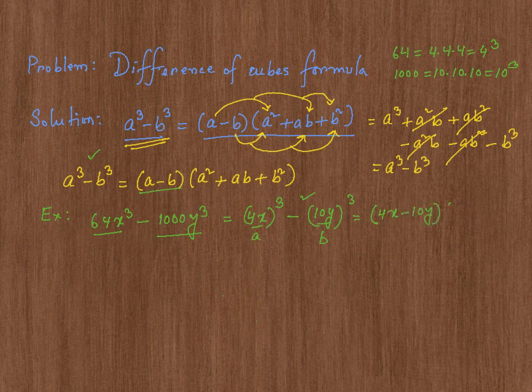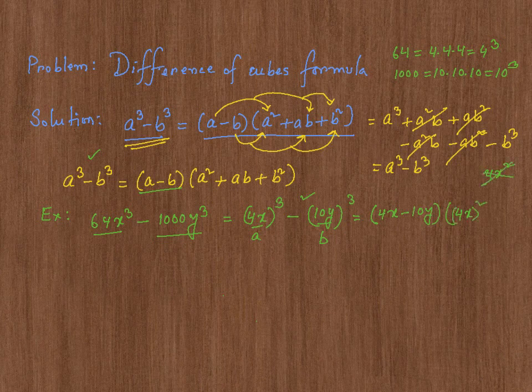Then times a square, means 4x, not 4x squared. That's not what you want, it's 4x whole square. Then we have plus ab, which means 4x times b is 10y.